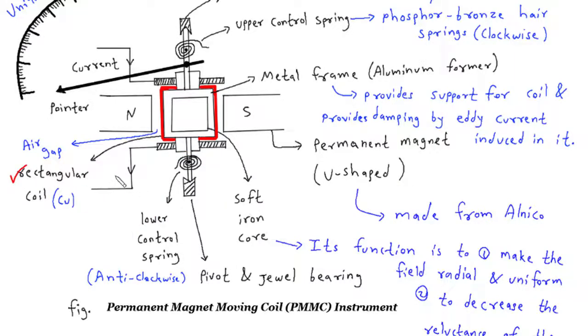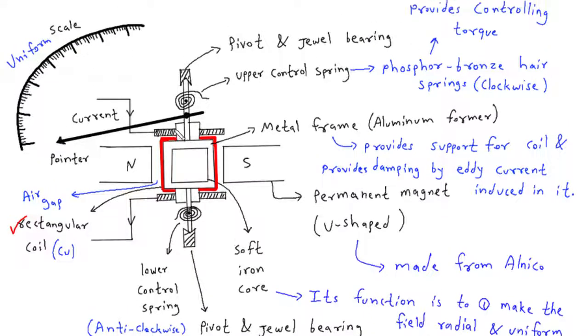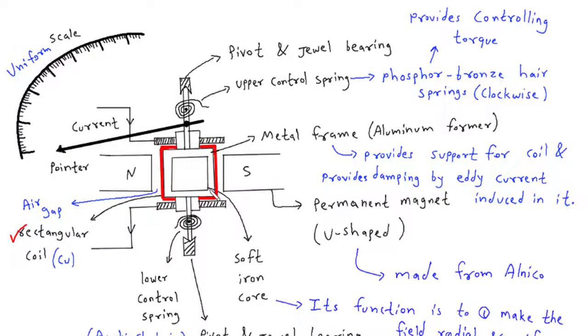Rectangular coil: The rectangular coil is a crucial component of the PMMC meter. It is made up of numerous turns of thin wire wound around a rectangular frame. When an electric current flows through the coil, it produces a magnetic field that interacts with the permanent magnet's field, causing a rotational force on the coil.